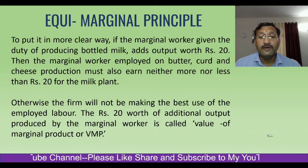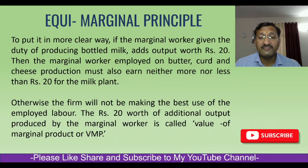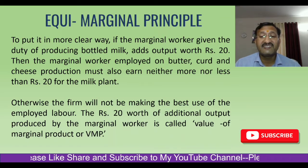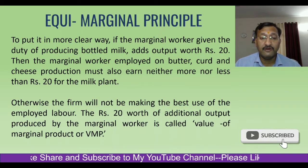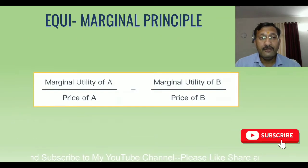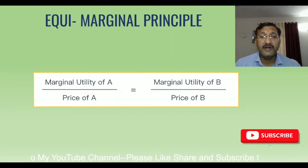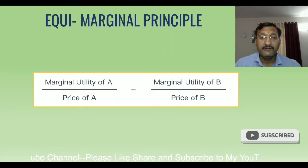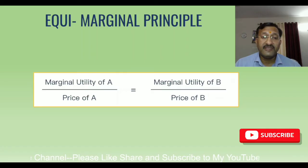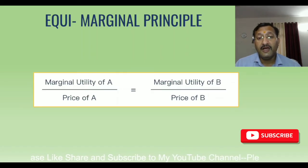So the rupees 20 worth of additional output produced by the marginal worker is called marginal product or VMP. We can understand through this particular equation: marginal productivity of A divided by price of A is equal to marginal utility of B divided by price of B.